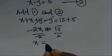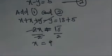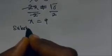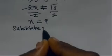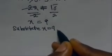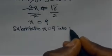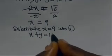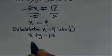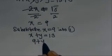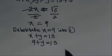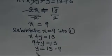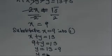We have x equals 18 divided by 2, that is 9. To obtain y, we substitute x equals 9 into equation 1. Equation 1 says x plus y equals 13, so 9 plus y equals 13. Collecting like terms, y equals 13 minus 9, and we have y equals 4.